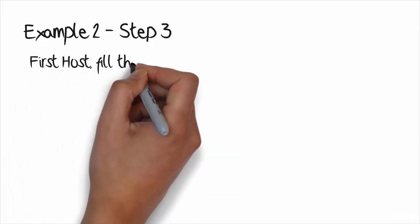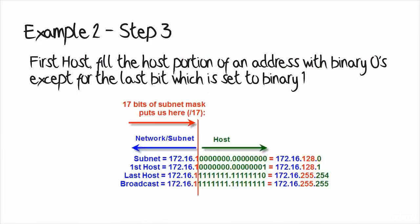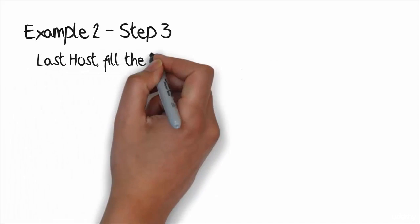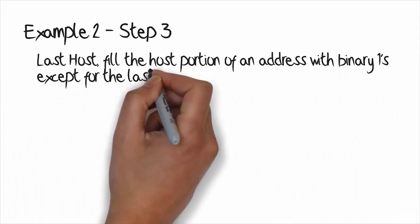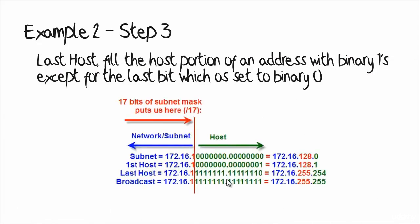To work out the first host in the subnet, fill the host portion with binary 0s except for the last bit which is set to 1 — giving you 172.16.128.1. To work out the last host, fill the host portion with binary 1s except for the last bit which is set to 0, giving you 172.16.255.254.